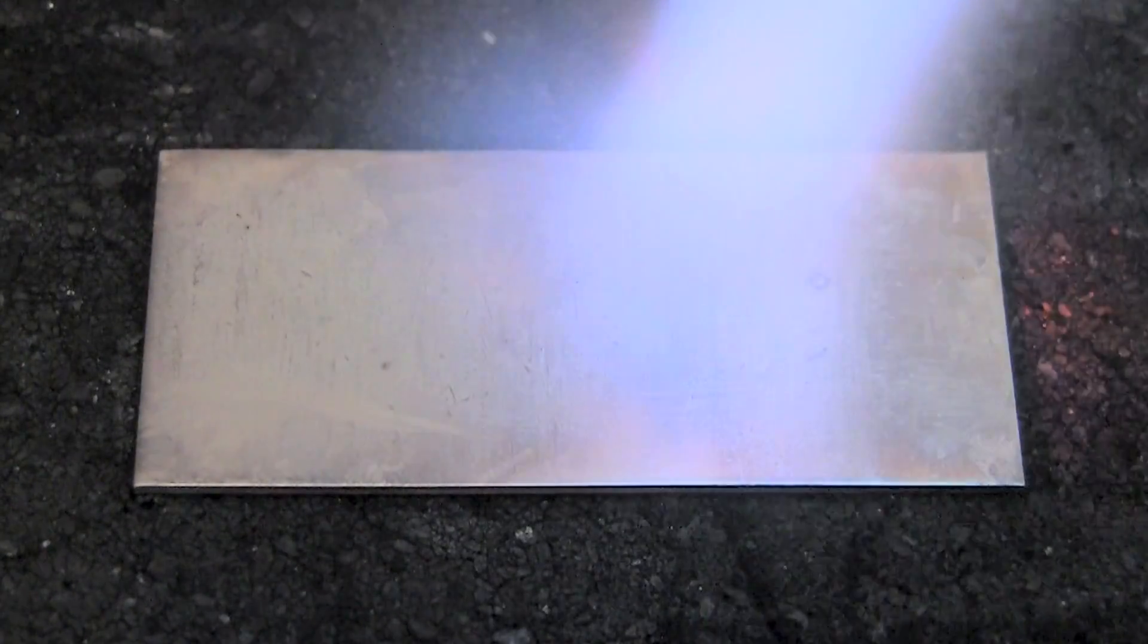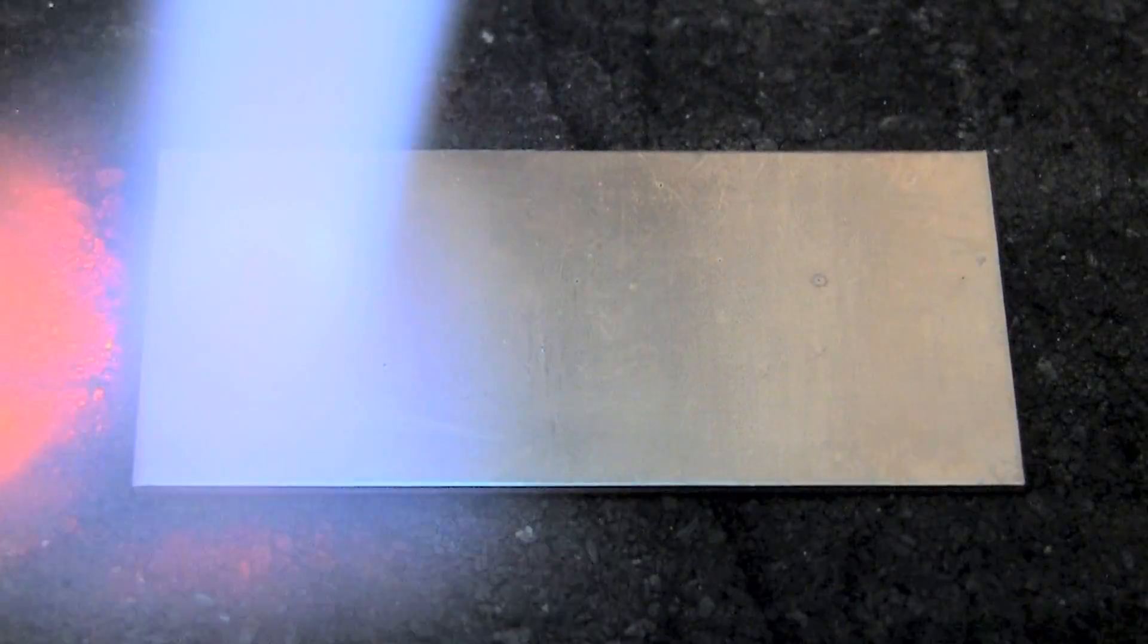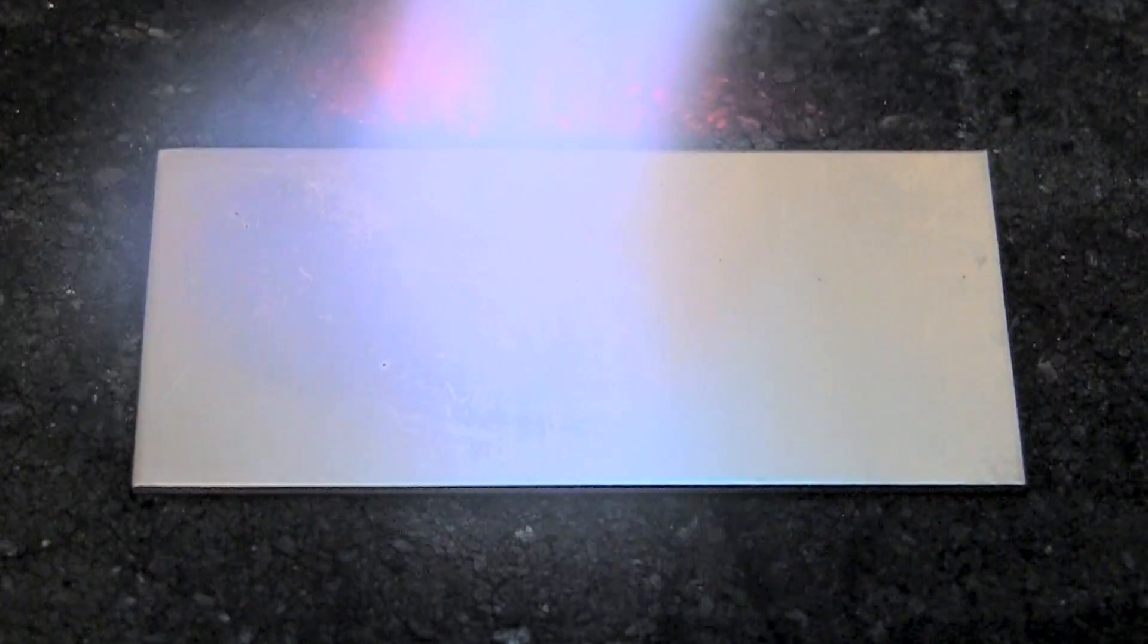If you watch carefully, you can actually see the layer forming. It goes from shiny to a frosty white.